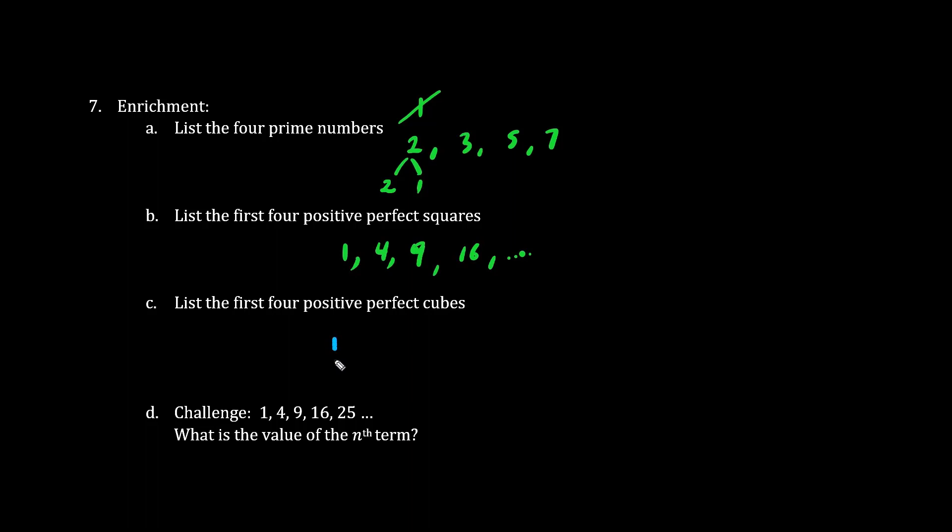1 is a positive perfect cube because 1 times 1 times 1 is 1. 2 times 2 times 2 is 8. So 8 is a perfect cube. 3 times 3 times 3 is 27. And 4 times 4 times 4, we have 16 times 4 is 64.